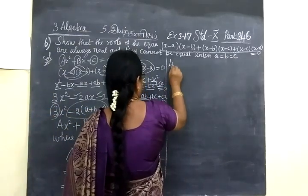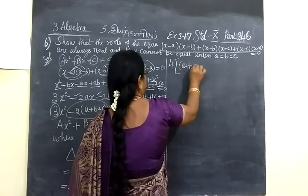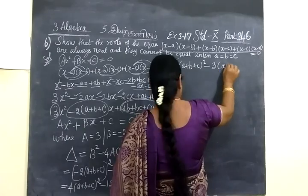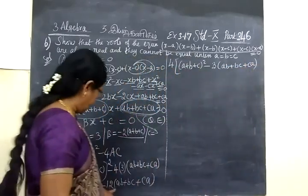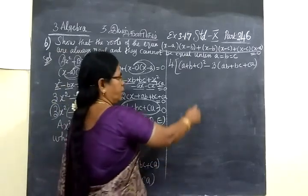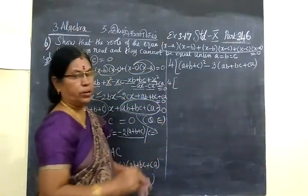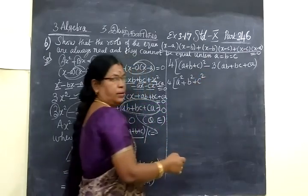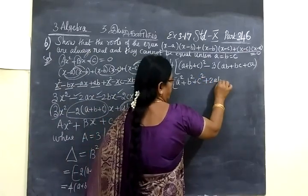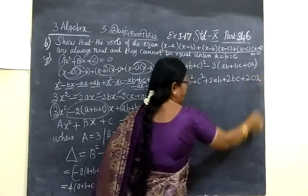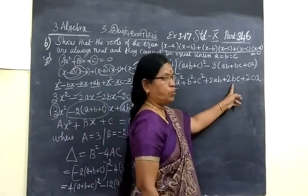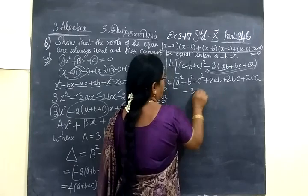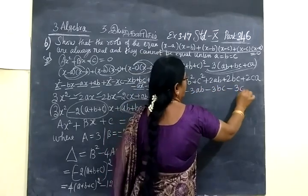Take 4 common. Inside we have (a plus b plus c) whole square minus 3(ab plus bc plus ca). Now expand (a plus b plus c)² as a² plus b² plus c² plus 2ab plus 2bc plus 2ca. Then take minus 3 inside, giving minus 3ab minus 3bc minus 3ca.